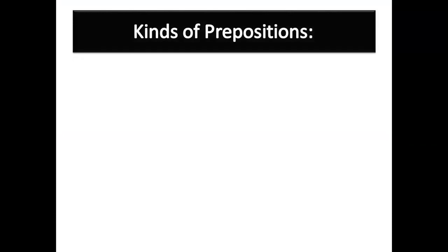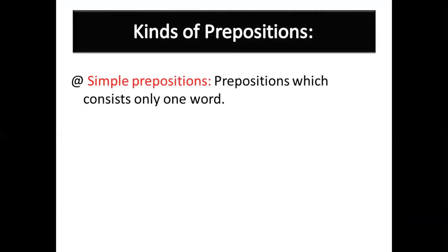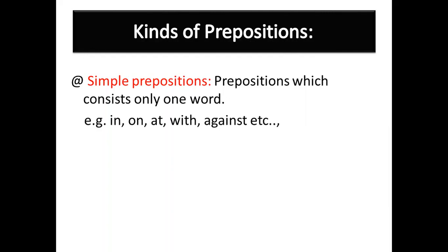Now, kinds of prepositions. The first type is simple prepositions. Simple prepositions are those which consist of only one word. For example: in, on, at, with, over, through, under, above, and so on.